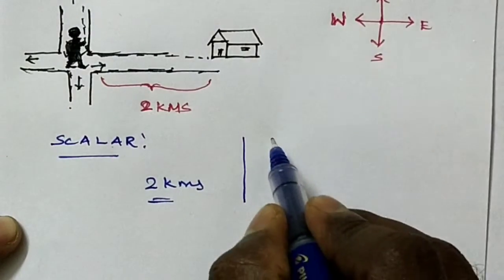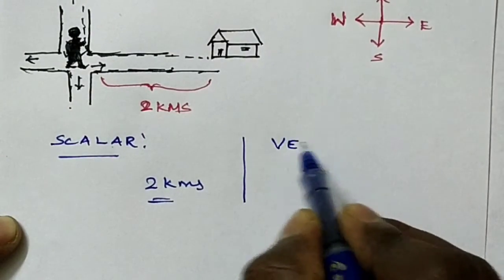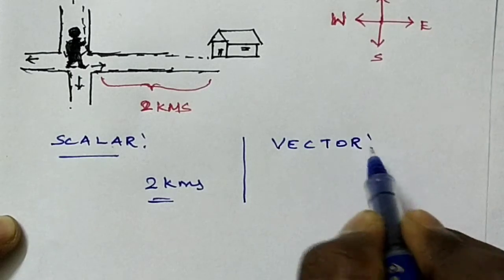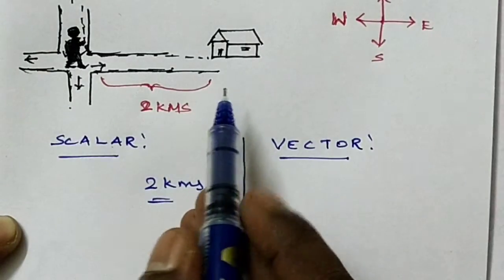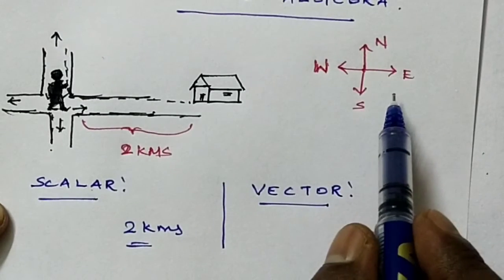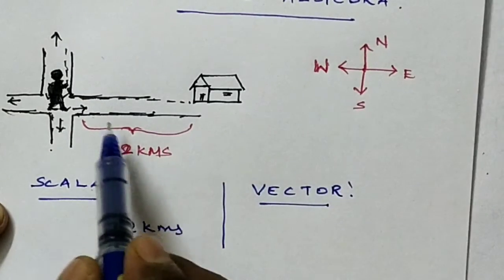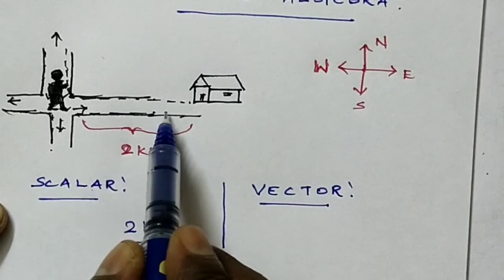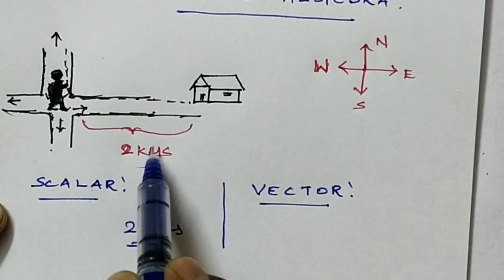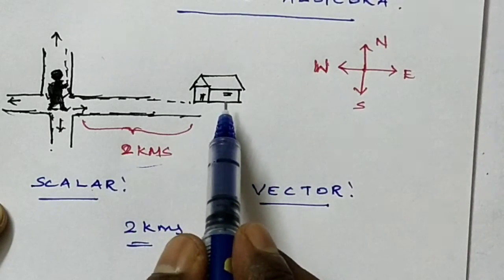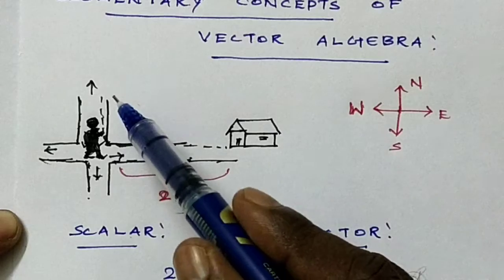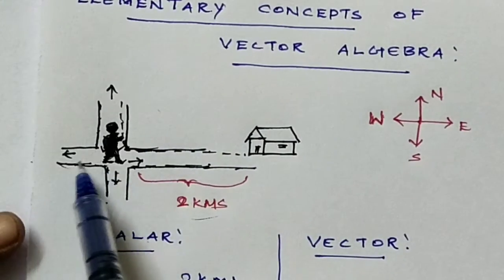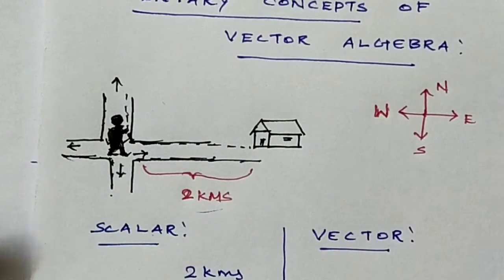Now moving to the vector quantity. Suppose that person is moving in a direction — say east. That person moves two kilometers in the east direction and reaches home.